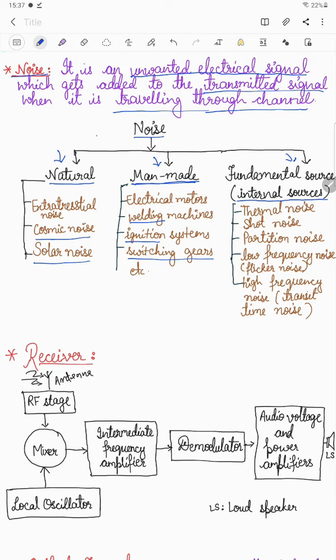The fundamental or internal sources of noise include thermal noise, shot noise, partition noise, low-frequency or flicker noise, and high-frequency or transit-time noise. These are the different internal noise types generated in the device itself. I will explain each noise in detail when we cover the noise chapter. These noises may get added during communication into the channel — natural, manmade, or internal noise.